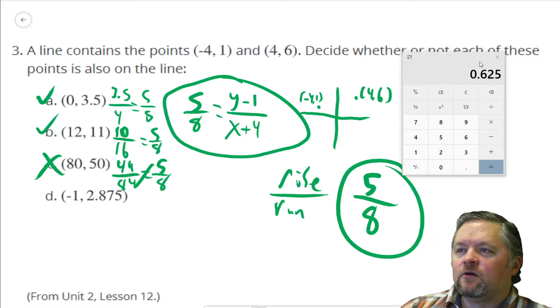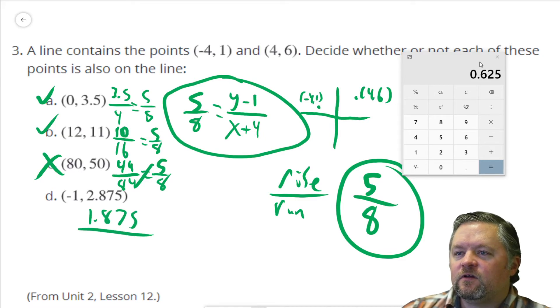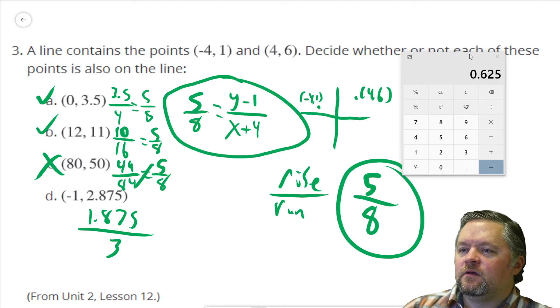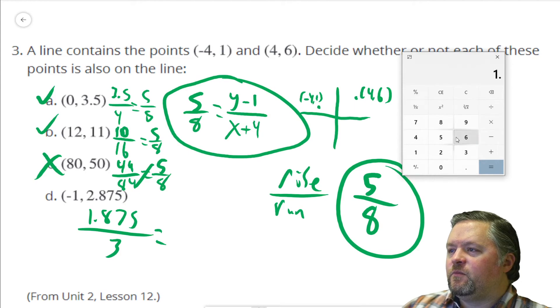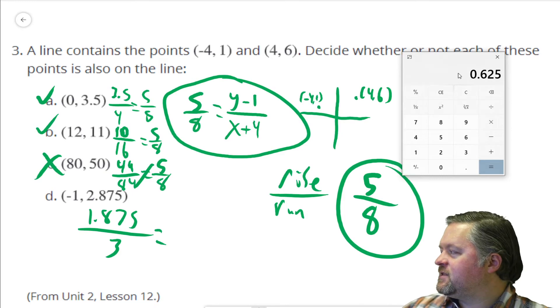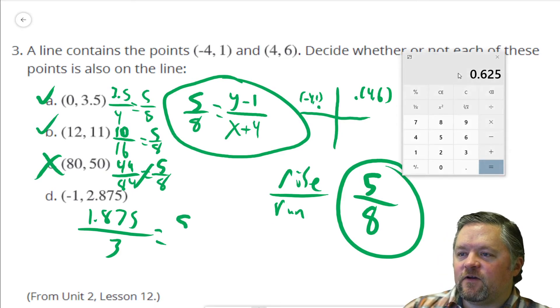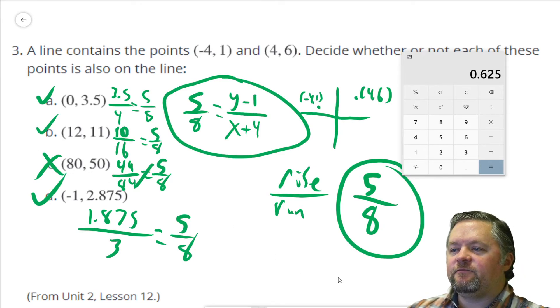Our next one here. y minus 1, 2.875 minus 1 is 1.875 over x plus 4, negative 1 plus 4 is 3. You want to do this one in your head? I don't. 1.875 divided by 3. Hey, that's the same thing. That is 5/8. So A, B, and D work. C is a big fat no.